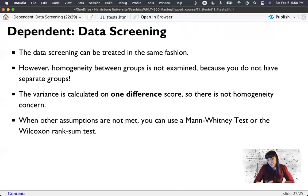When the other assumptions are not met, mostly normality with small samples, you can use a Mann-Whitney-U test or the Wilcoxon rank sum test. So there's a version of that for independency and a version of that for dependency.